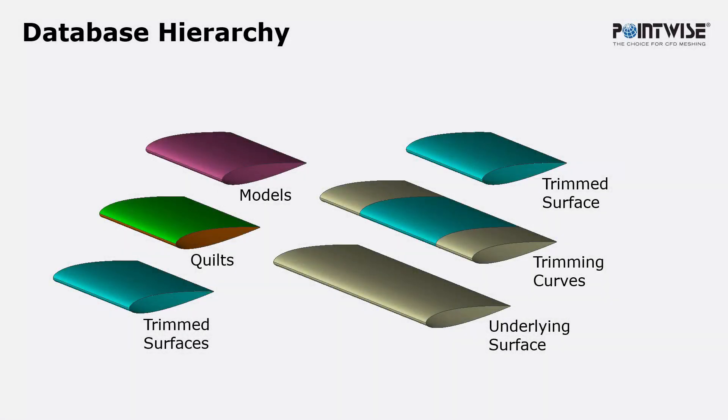So the database hierarchy in PointWise starts from the underlying surface and its UV parameterization. Taking that underlying surface and trimming curves, we get trim surfaces or subsets of that UV parameterization, and it's these surfaces that represent the geometry that we see in the scene that we'll be meshing.